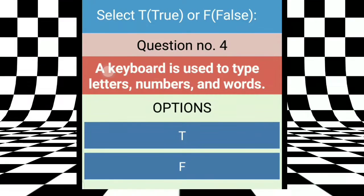Question number 4 is, a keyboard is used to type letters, numbers and words. Means, keyboard ko use kiya jata hai to type karne ke liye letters, numbers and words ko. Is it true? Yes. Hum keyboard ke haalse letters, numbers and words ko type kar sakti hai. This is true. Right answer.